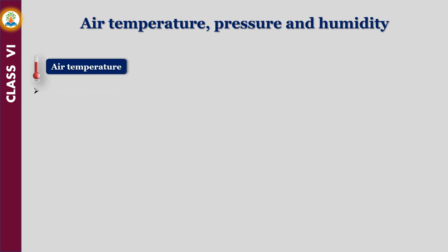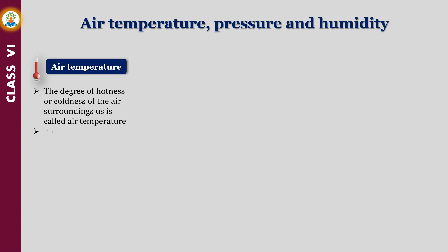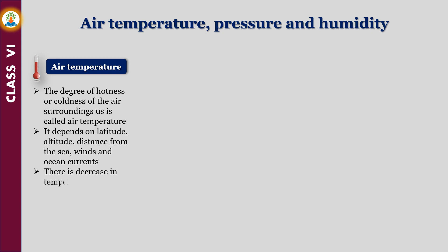The degree of hotness or coldness of the air surrounding us is called air temperature. It depends on latitude, altitude, distance from the sea, winds, and ocean currents. There is a decrease in temperature with an increase in latitude and altitude.